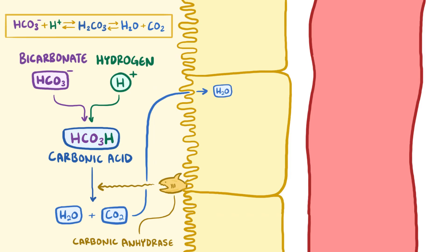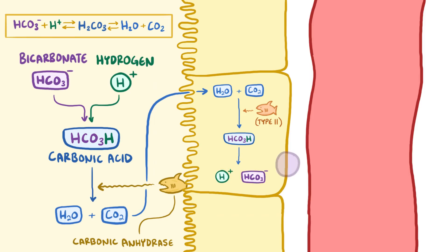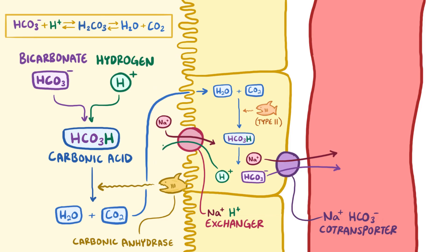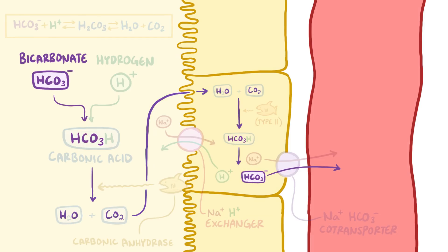That water and carbon dioxide happily diffuses across the membrane into the cells, where carbonic anhydrase type 2 facilitates the reverse reaction, combining them to form carbonic acid, which dissolves into bicarbonate and hydrogen. A sodium bicarbonate co-transporter on the basolateral surface then snatches up the bicarbonate and a nearby sodium ion, and shuttles both into the blood. Meanwhile, a sodium-hydrogen exchanger on the apical surface pulls sodium into the cell, while pushing hydrogen back into the tubule. So at the end of the day, there's a movement of bicarbonate from the tubule to the blood.